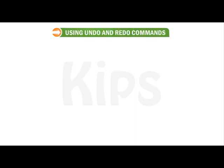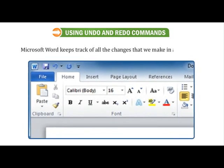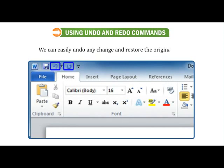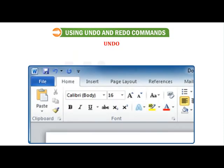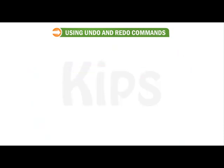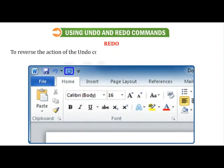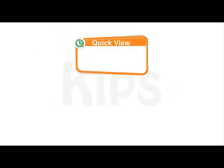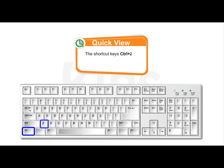Students, let us understand how to use Undo and Redo commands. Microsoft Word keeps track of all the changes that we make in a document, so we can easily undo any change and restore the original text. The Undo option reverses the effect of the last command. To reverse one or more actions, click on the Undo button on the Quick Access Toolbar. The Redo command reverses the action of the Undo command; click the Redo button on the Quick Access Toolbar. The shortcut keys are Ctrl+Z for Undo and Ctrl+Y for Redo.